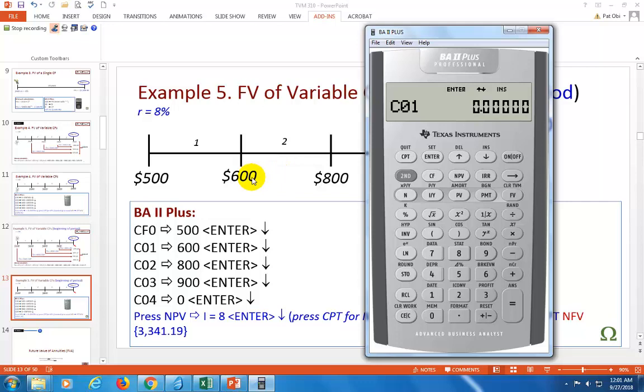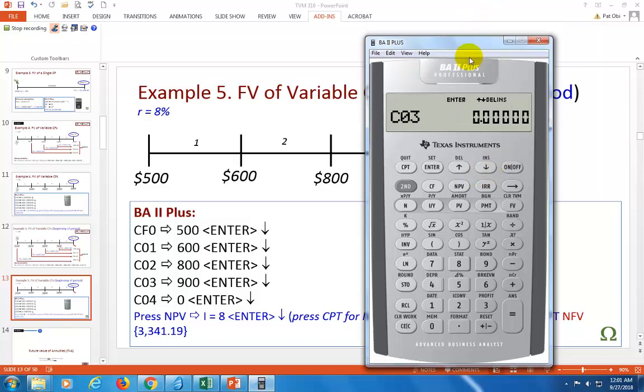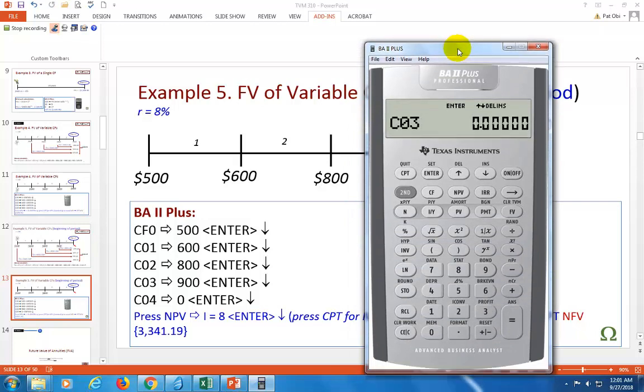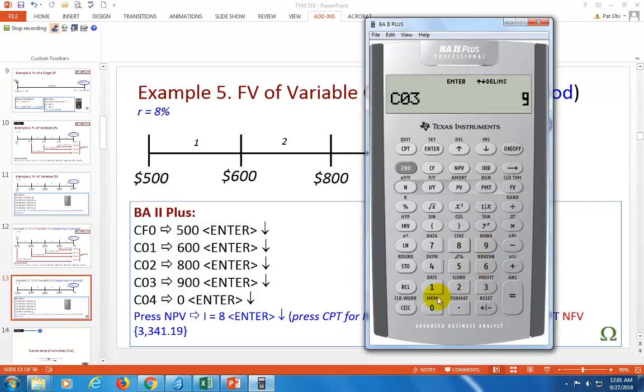Scroll to C1, which is 600, enter. Scroll to C2, which is this 800, enter. Then scroll to C3, which, as you can see here, the cash flow at the end of the third period is 900. Enter. I summarize them over here.